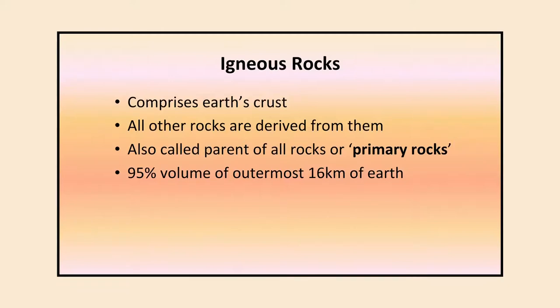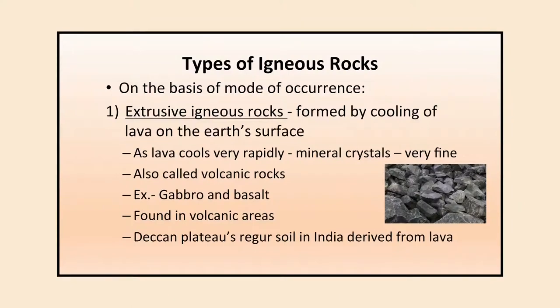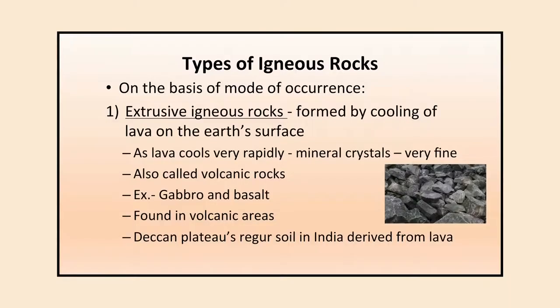On the basis of mode of occurrence there are extrusive and intrusive igneous rocks. Extrusive igneous rocks are formed by cooling of lava on the Earth's surface. The lava cools very rapidly in contact with the atmosphere, so the mineral crystals formed are very fine. These are also called volcanic rocks; examples are gabbro and basalt. In India, the Deccan Plateau's regur soil is derived from lava, and igneous rocks are found in abundance there.